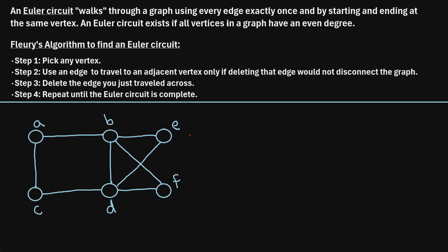So let's check out an example of how to actually use Fleury's algorithm. Let's say we have this graph down here. It has six vertices which I've labeled A through F. To determine if an Euler circuit even exists in this graph, we need to make sure that the degree of each vertex is an even number. So the degree of a vertex is just the number of edges connected to it. Vertex A has two edges connected to it, so vertex A has a degree of two.